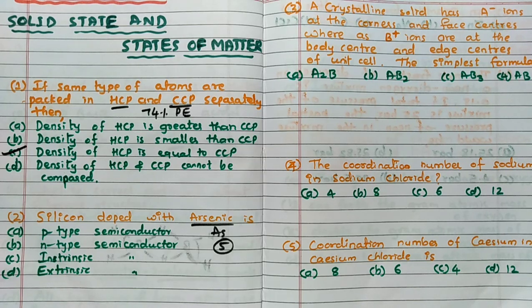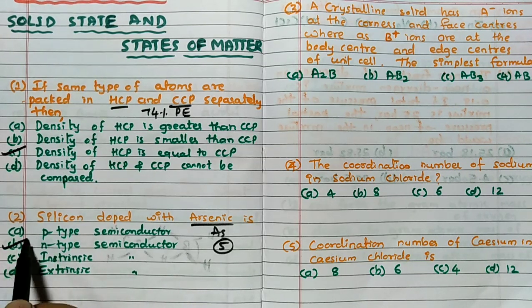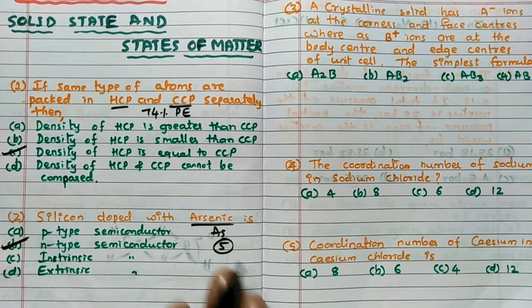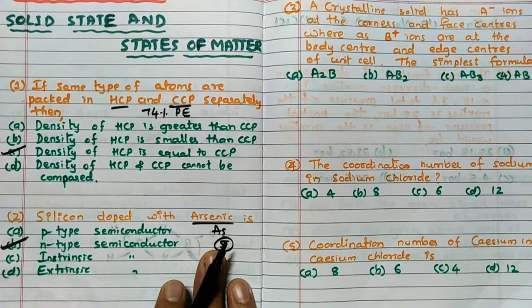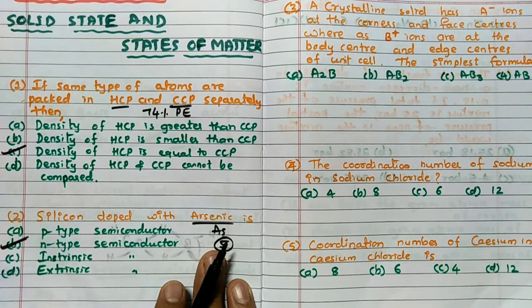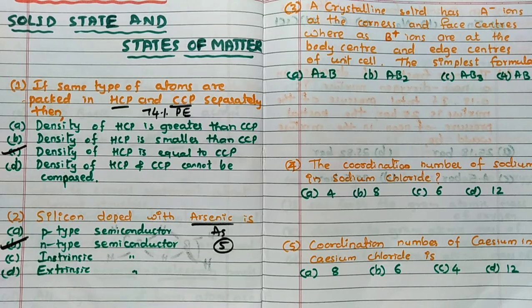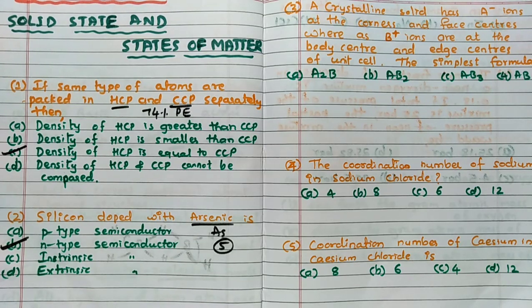That is responsible for the conduction. So hence this is called N-type of semiconductor. P-type will be formed when boron is doped with silicon, or gallium - 13th group element. This is 15th group element, N-type semiconductor is going to form.